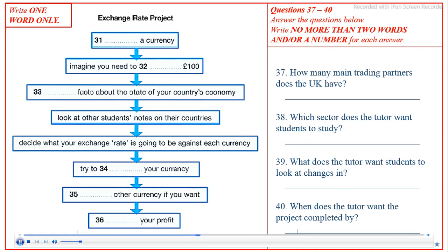After that is all sorted, what you've got to do is go round the other students and attempt to sell your money to the others. Remember, this will depend on the success of your country's economy and the rate you've fixed for your currency. Now, you're not allowed to just swap currencies with each other, but you may wish to buy from the other countries. But you must do a proper transaction. All the way through this, you must keep your accounts properly for each transaction.